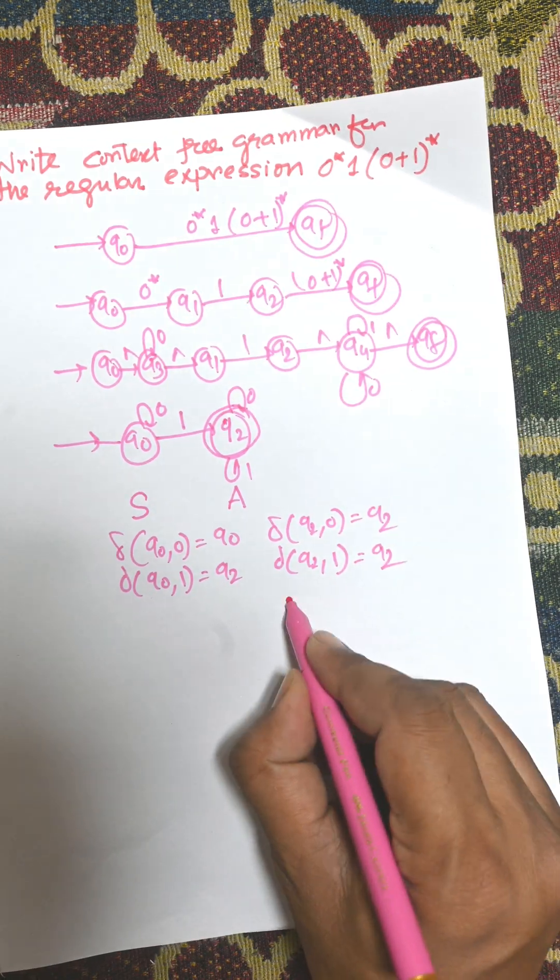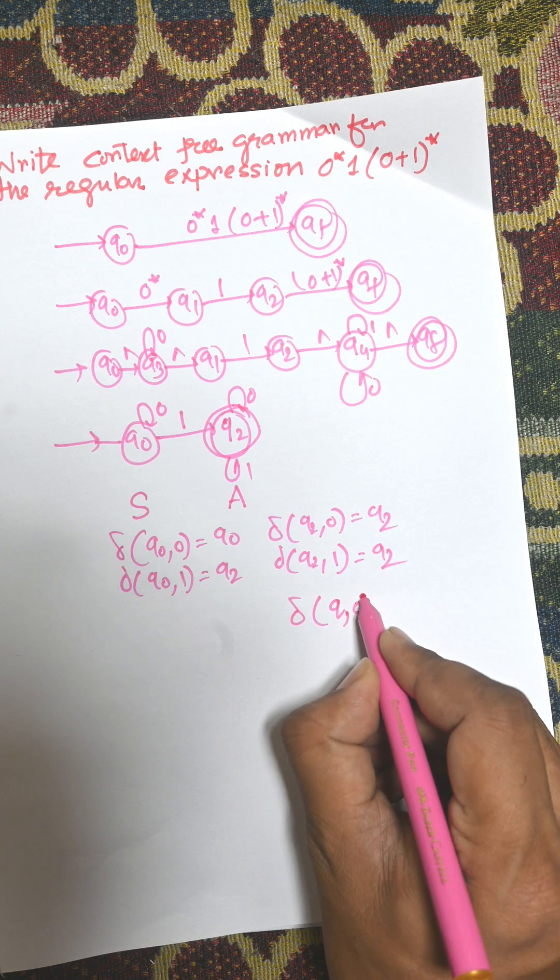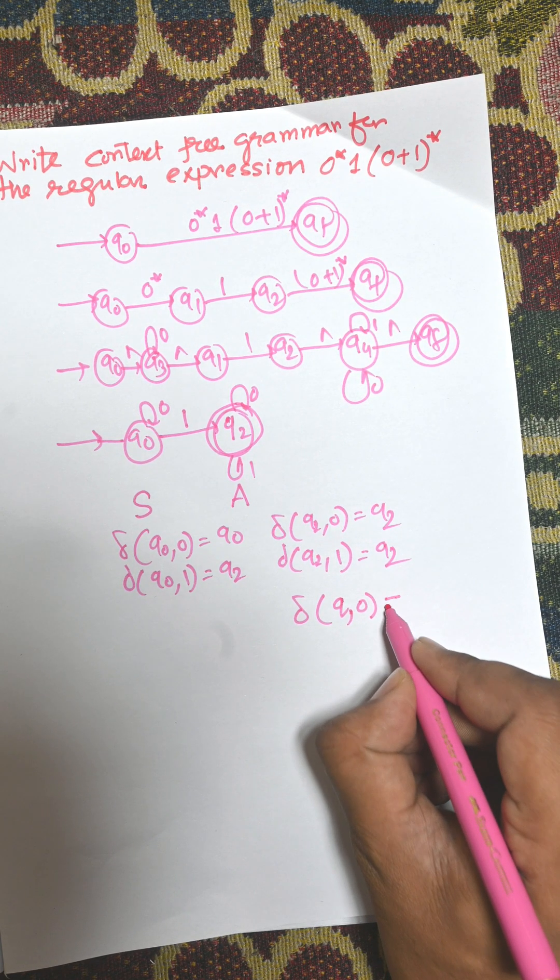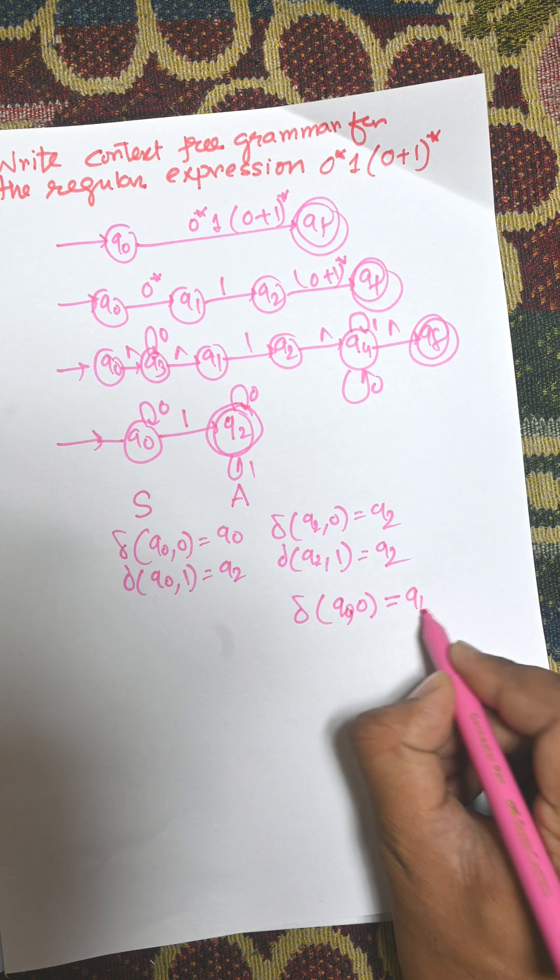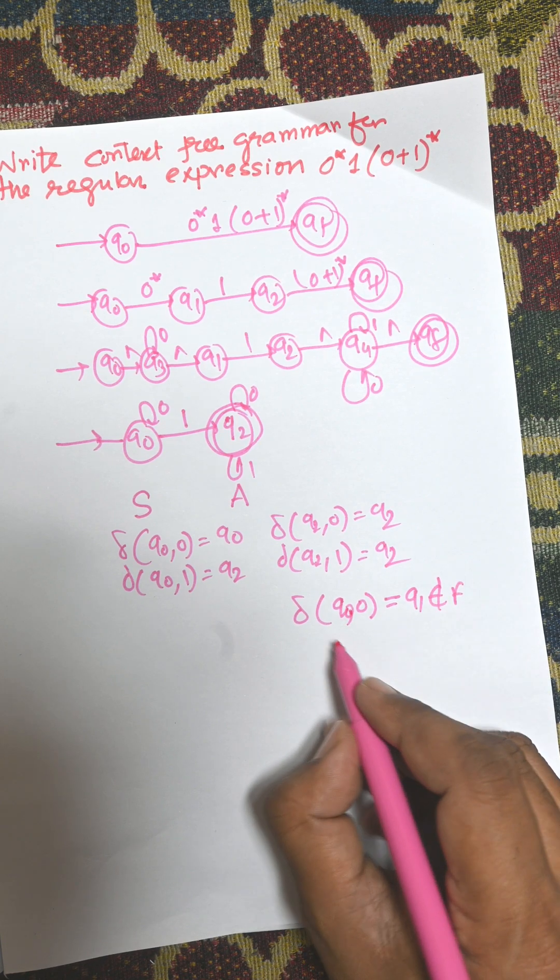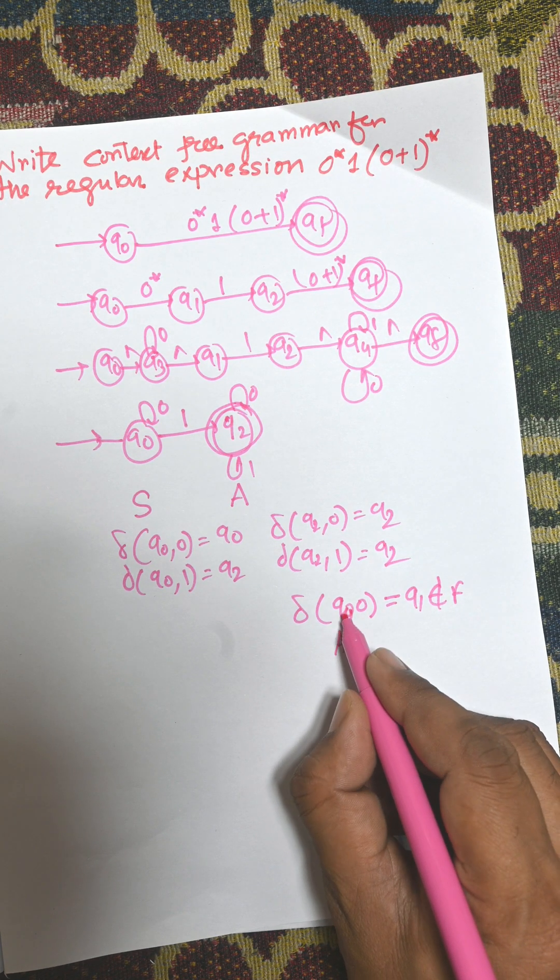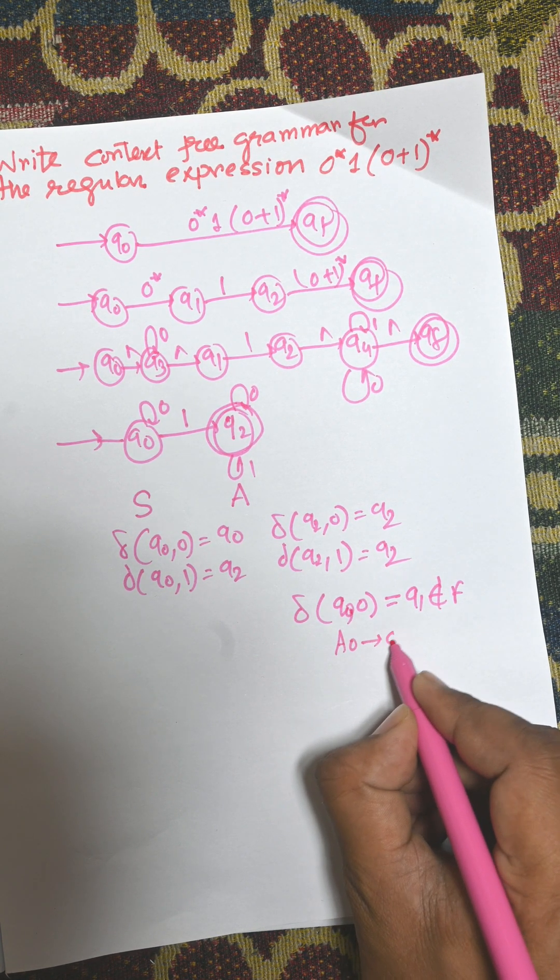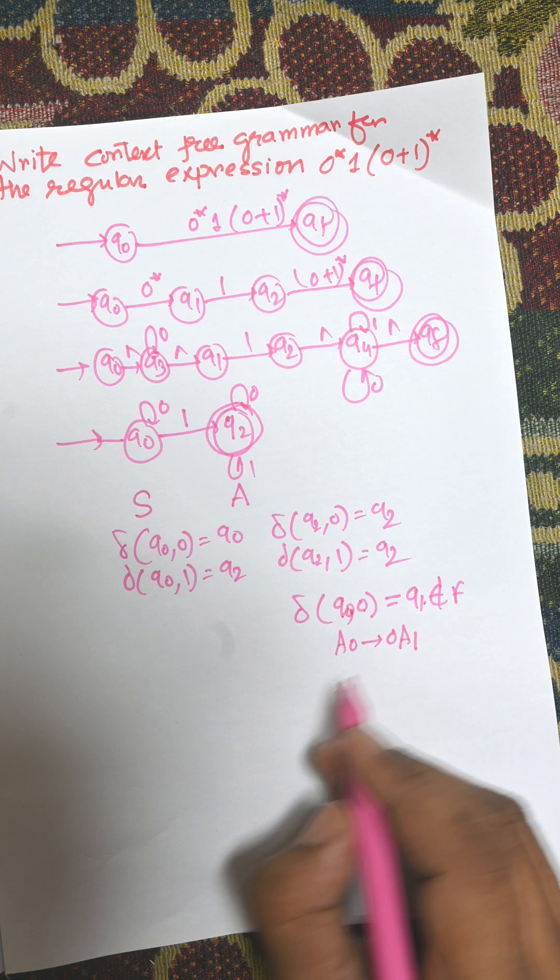There is a rule. If any state Q0 to 0 goes to another state which is not a final state, then the production rule will be A. That is, consider this: A0 to 0 A1.